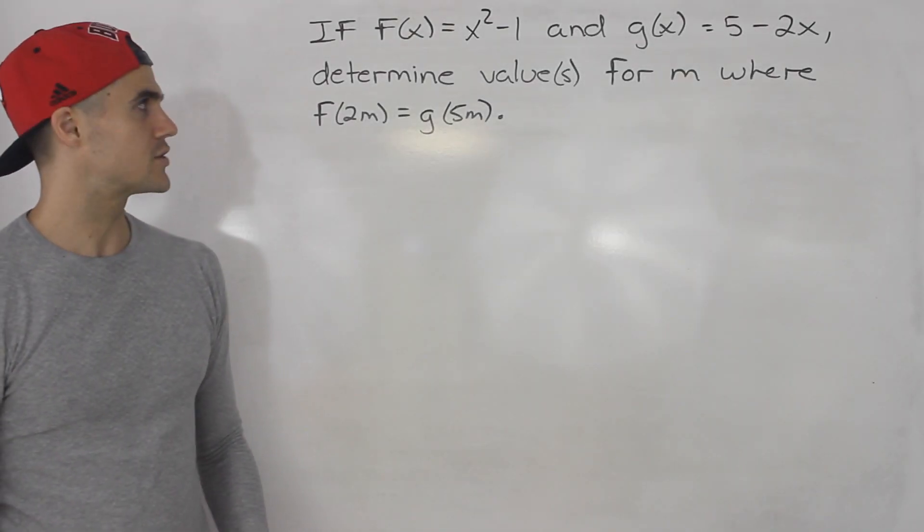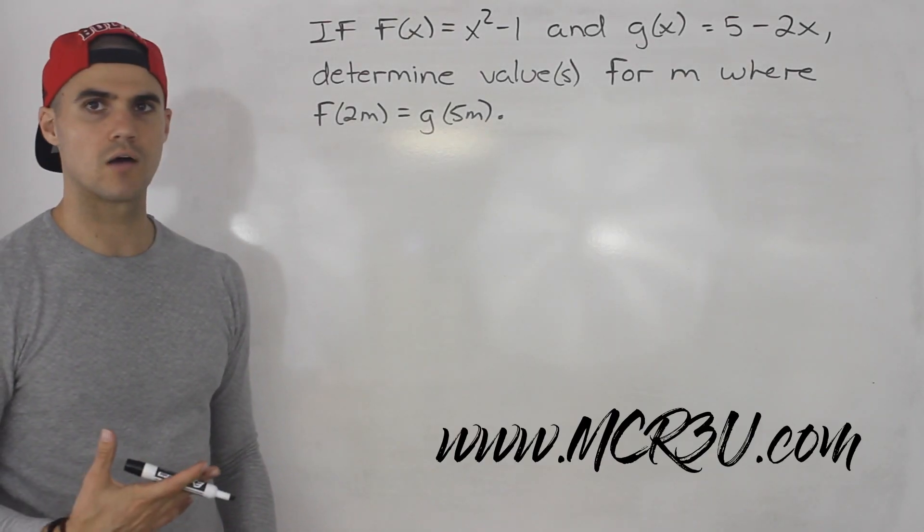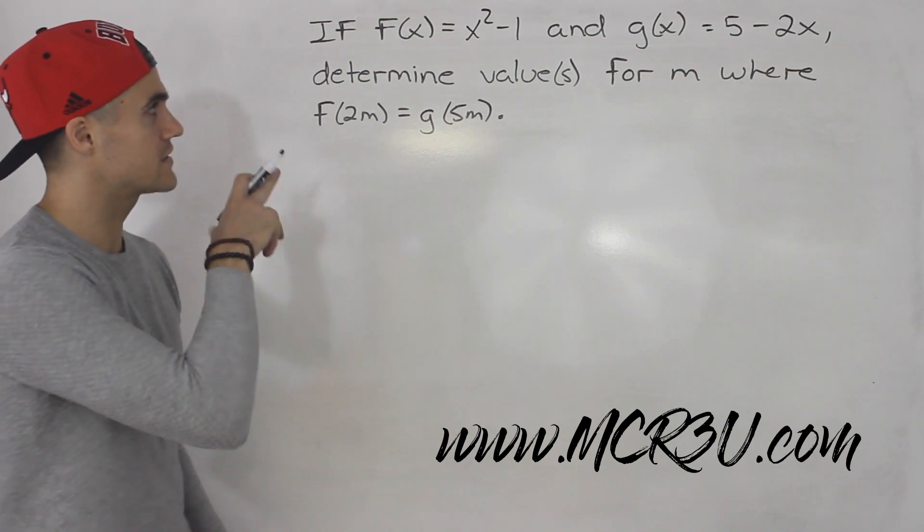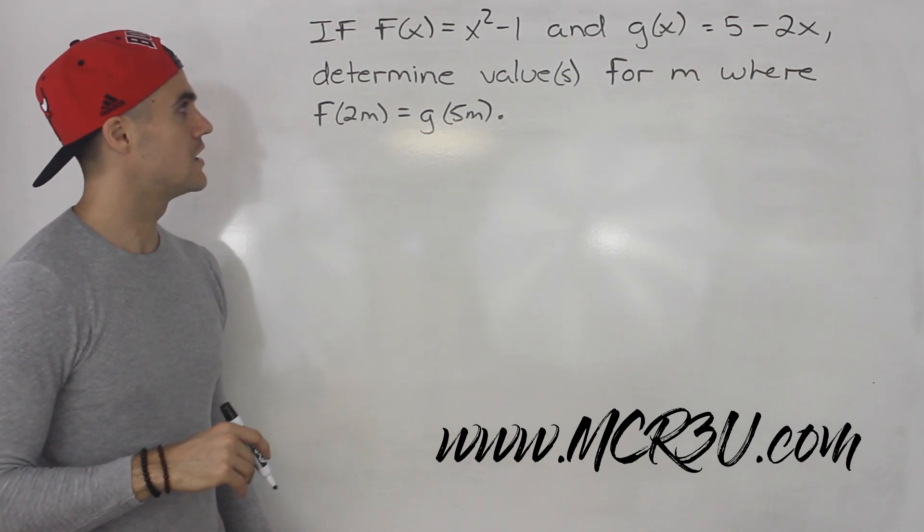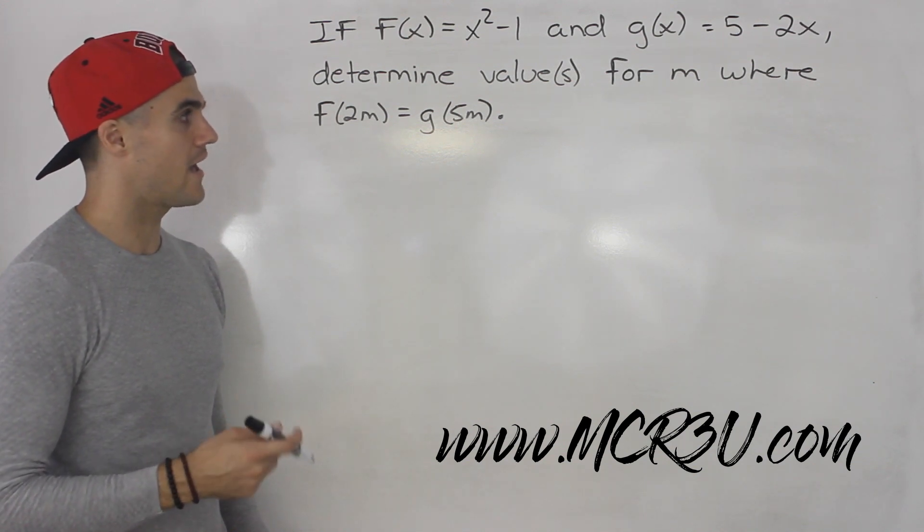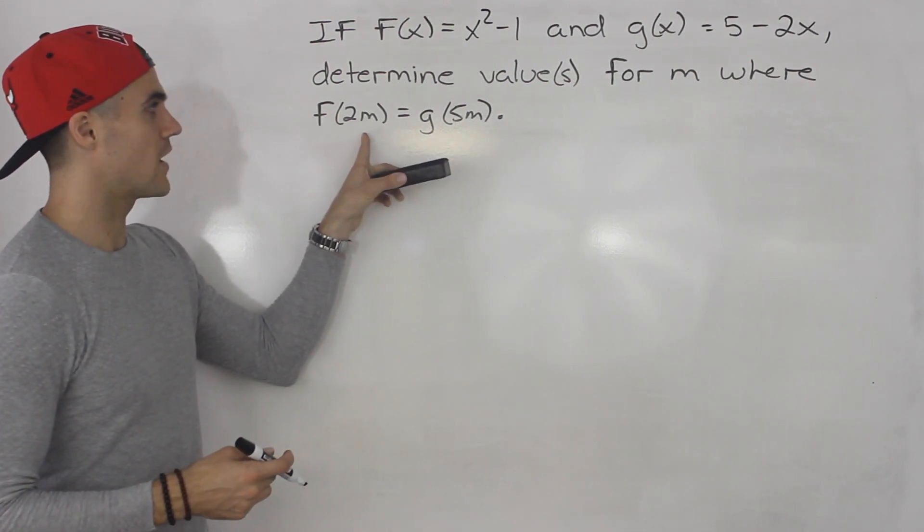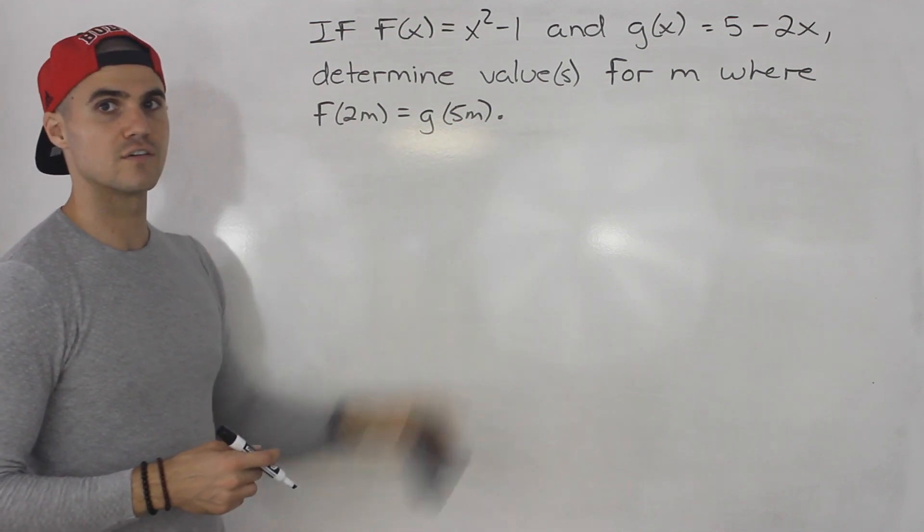What's up everybody, welcome back. Moving on with function notation, we have somewhat of a word problem here. If f(x) = x² - 1 and g(x) = 5 - 2x, we have to determine the value or values for m where f(2m) = g(5m).